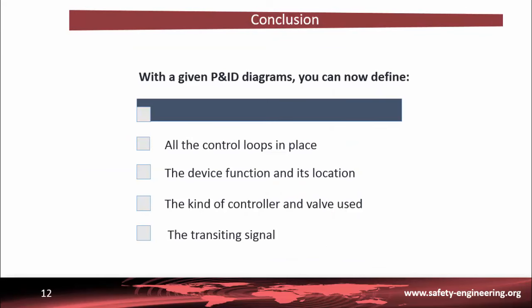Now that we have reached the end of this part, you are well on your way to understanding any P&ID diagram related to the chemical process industry. You can define any control loops and associated devices within these loops, such as the kind of controller used or the kind of valve in place on the plant. You can get an idea of where the various devices are located and define the kind of signal transiting between them. The next step consists in dealing with some real-life examples of processes, which is what the following part will focus on.